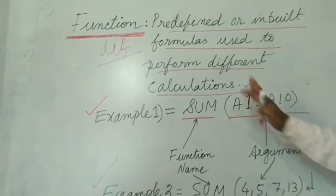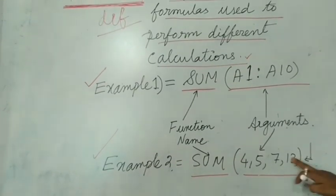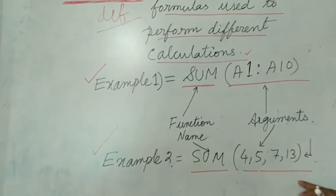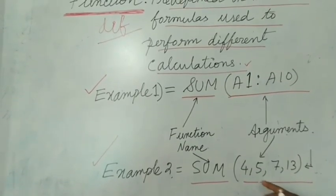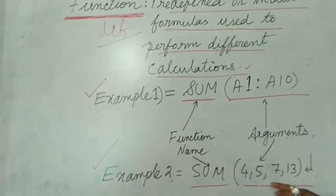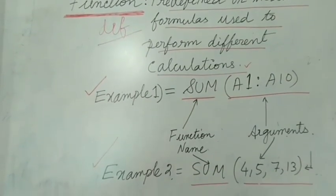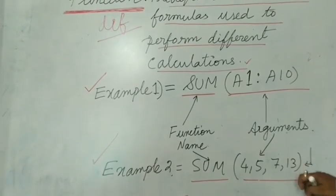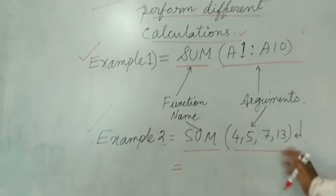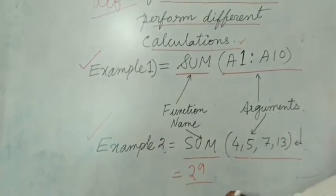For example: =SUM(4, 5, 7, 13) — I want to find the sum of these numbers. There are two parts: the function name and the arguments. MS Excel will find out the sum and display it. The answer comes as 29. Here MS Excel does the job of addition automatically.